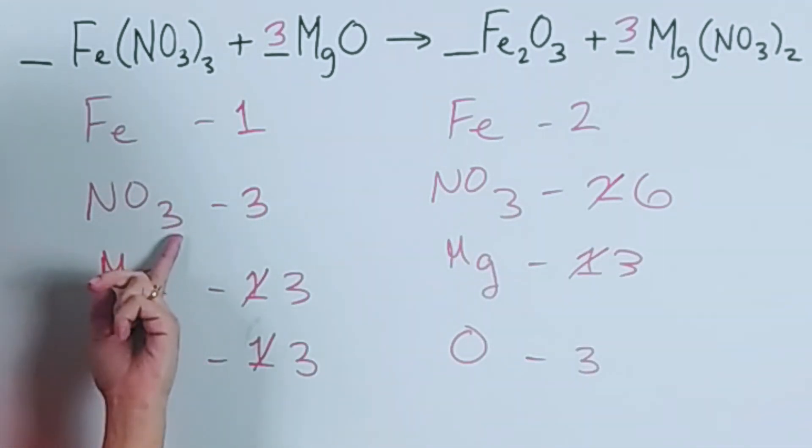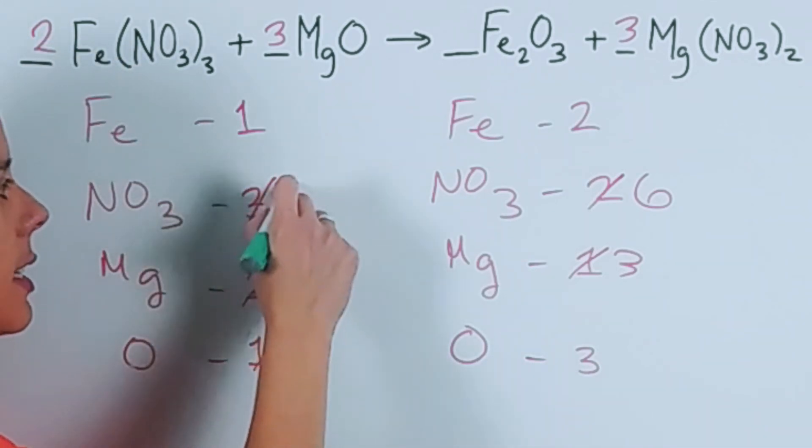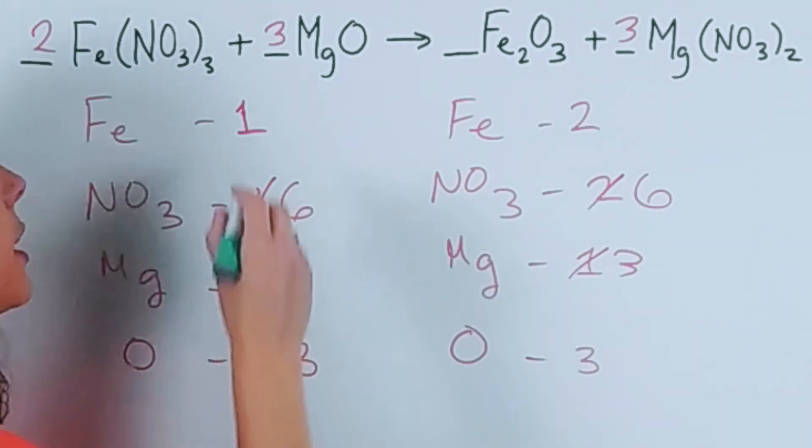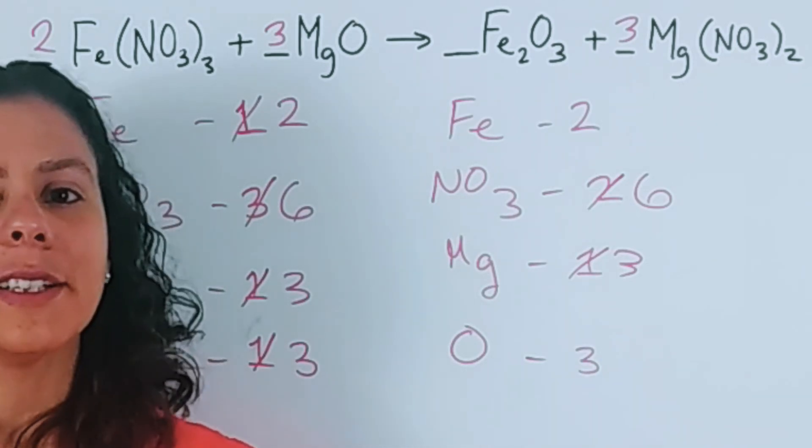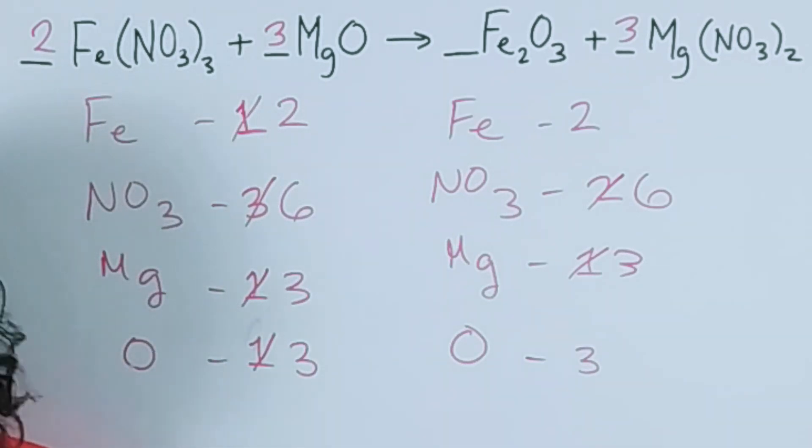I have three. I put a two in front. That gives me six nitrates and it gives me two irons. And bada bim, bada boom, we are done balancing the equation.